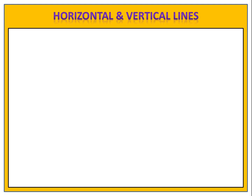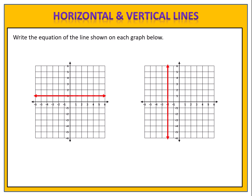Now let's take a look at a couple of examples where we have a horizontal line in one and a vertical line in the other. The first graph is a horizontal line. Horizontal lines pass through the y-axis and have the equation y equals a number. This graph passes through the y-axis at 1, so the equation is y equals 1. The second graph is a vertical line that passes through the x-axis at negative 2, so the equation is x equals negative 2.